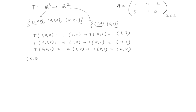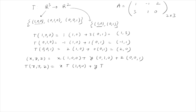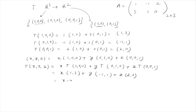Any (x,y,z) in R³ can be written as x·(1,0,0) + y·(0,1,0) + z·(0,0,1). So T(x,y,z) = x·T(1,0,0) + y·T(0,1,0) + z·T(0,0,1) = x·(1,3) + y·(−1,1) + z·(2,0) = (x − y + 2z, 3x + y). This is the required linear map.